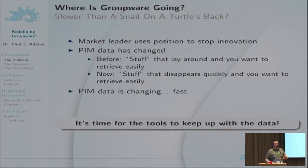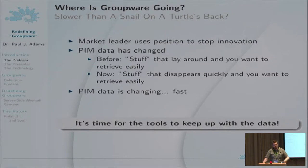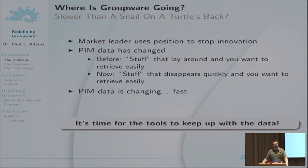Certainly the kind of data being handled is not changing. We're still talking about email, calendar, tasks — all the classic groupware content. When you look at how groupware used to be used, the stuff we used in our day-to-day lives — the events we put in our calendars, the email, the tasks — these are things we had lying around and wanted to keep but get back easily. So search was always important.